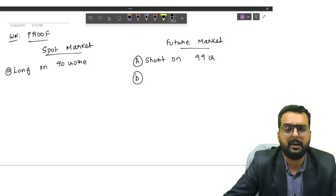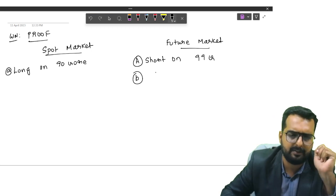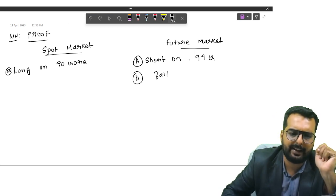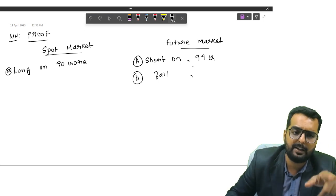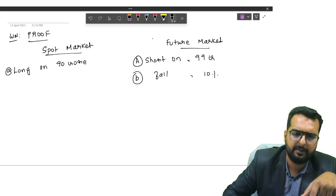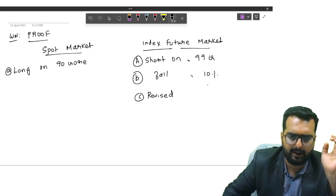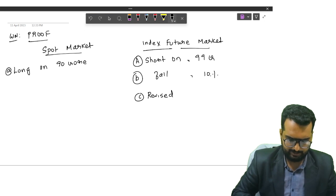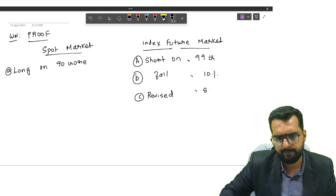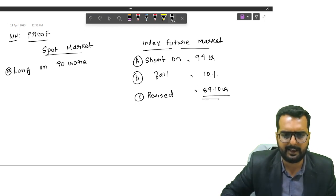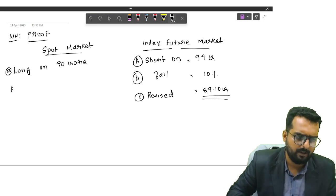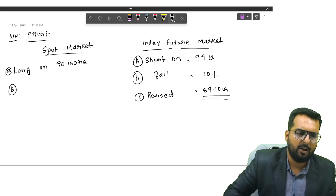Now, everyone interact with me. Index is falling by 10%. So, if index falls by 10%, the future price will also fall by how much percentage? Index future will also fall by 10%. So, what will be the revised value over here? 99 minus 10%. Do you get the answer as 89.10 crore?